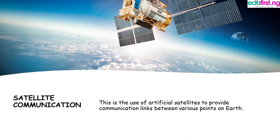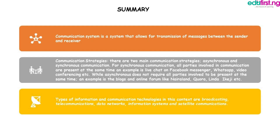Now let's do a summary of the class. A communication system is a system that allows for the transmission of messages between the sender and receiver. There are two main communication strategies: asynchronous and synchronous communication. For synchronous communication, all parties involved are present at the same time. Examples include live chat on Facebook Messenger, WhatsApp, and video conferencing.